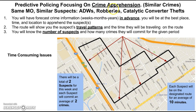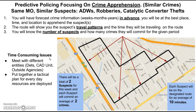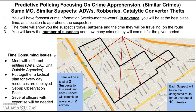The problem with crime apprehension is that it comes with certain requirements you have to meet in order to be successful. First, you have to meet with different entities — detectives, your crime analysis unit, even outside agencies. You also have to put together a tactical plan for your resources, set up observation posts, and use officers who have the background and expertise in doing these types of operations.